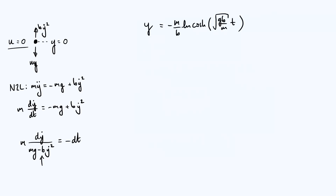Now, with our general y as a function of time, I want to finish by making a connection to the previous video on upwards motion. In particular, we're going to investigate whether it took our particle more time to reach its maximum height or more time to come back down to where it started. It might be interesting to pause and think about whether you can make a prediction based on simple physical reasoning, and then we can check whether it's consistent with what the maths tells us.